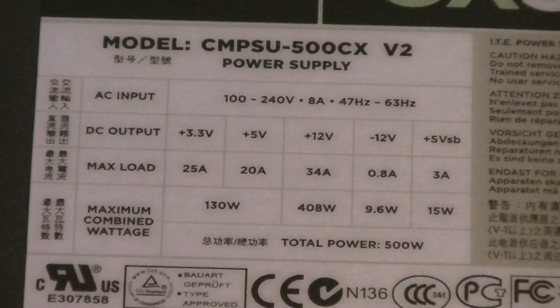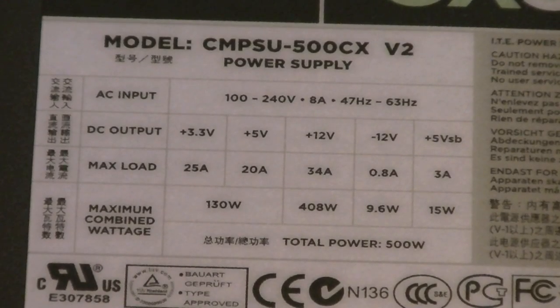This power supply has a single +12 volt rail that offers 34 amps and delivers 408 watts. The +3.3 and +5 volt rails offer 25 and 20 amps and also deliver 130 watts.